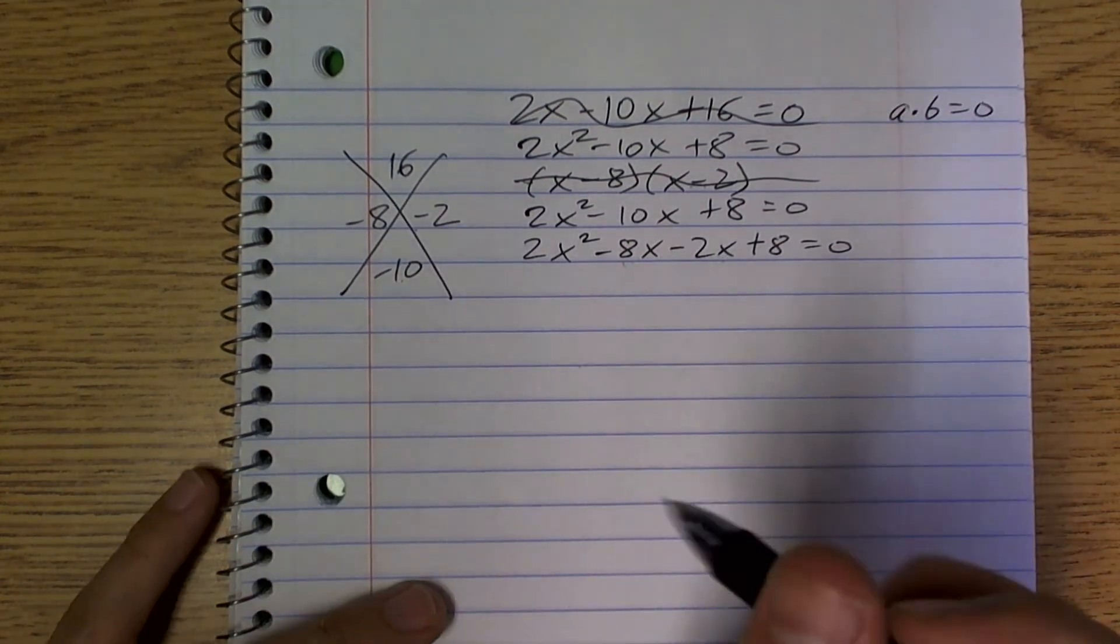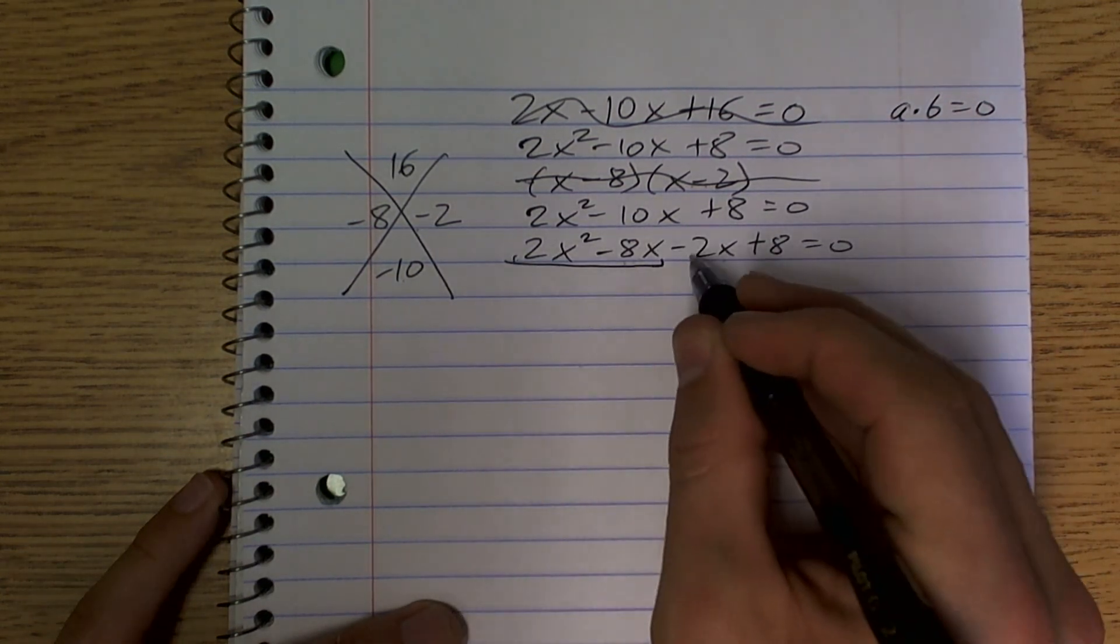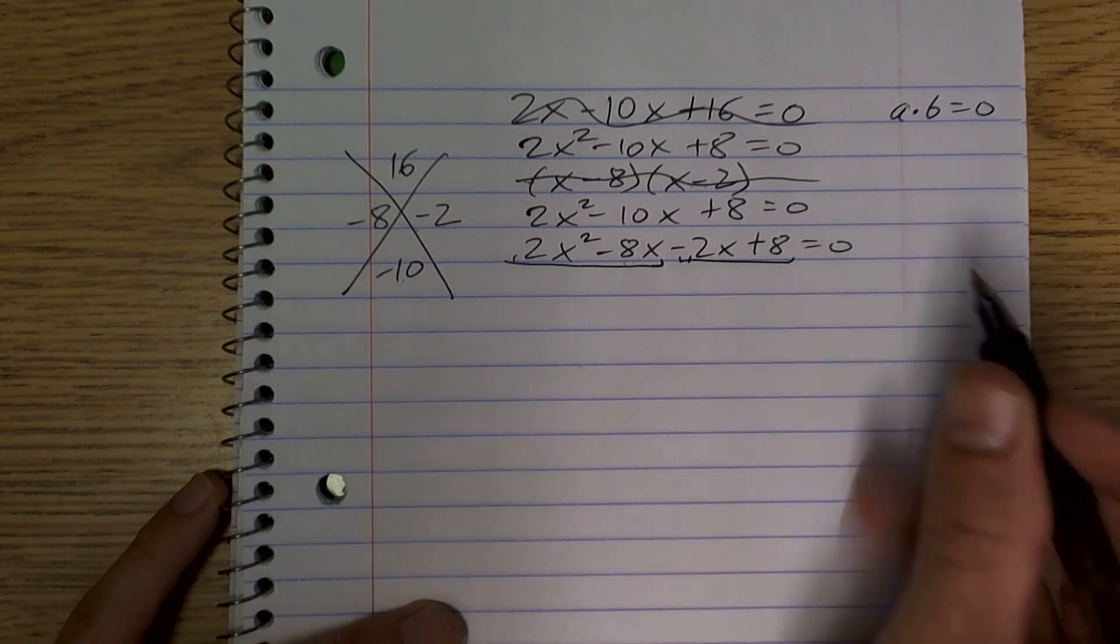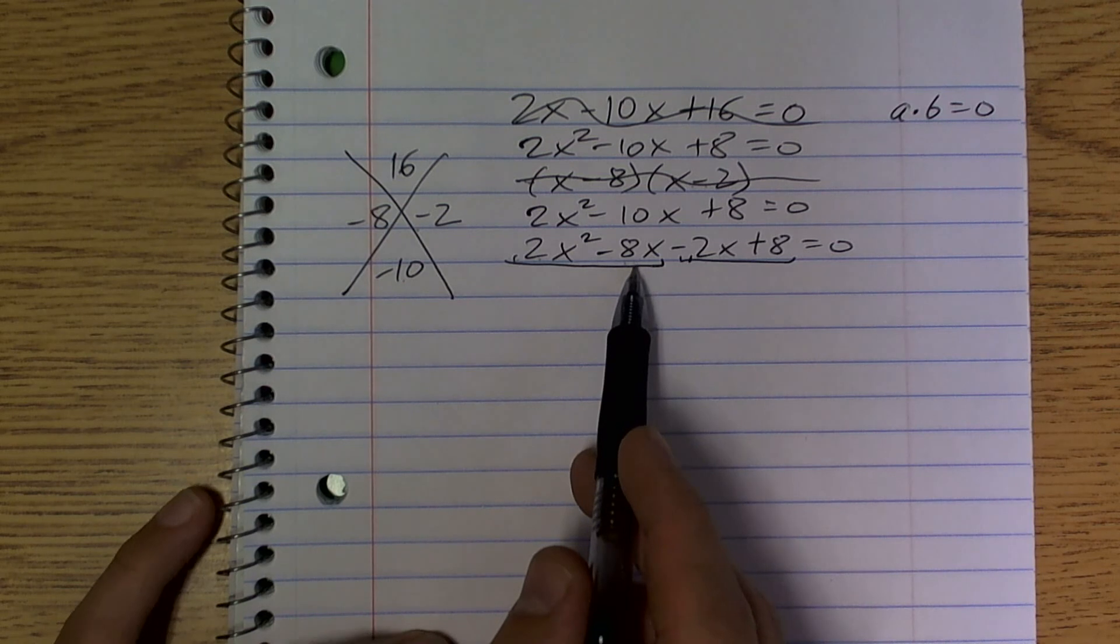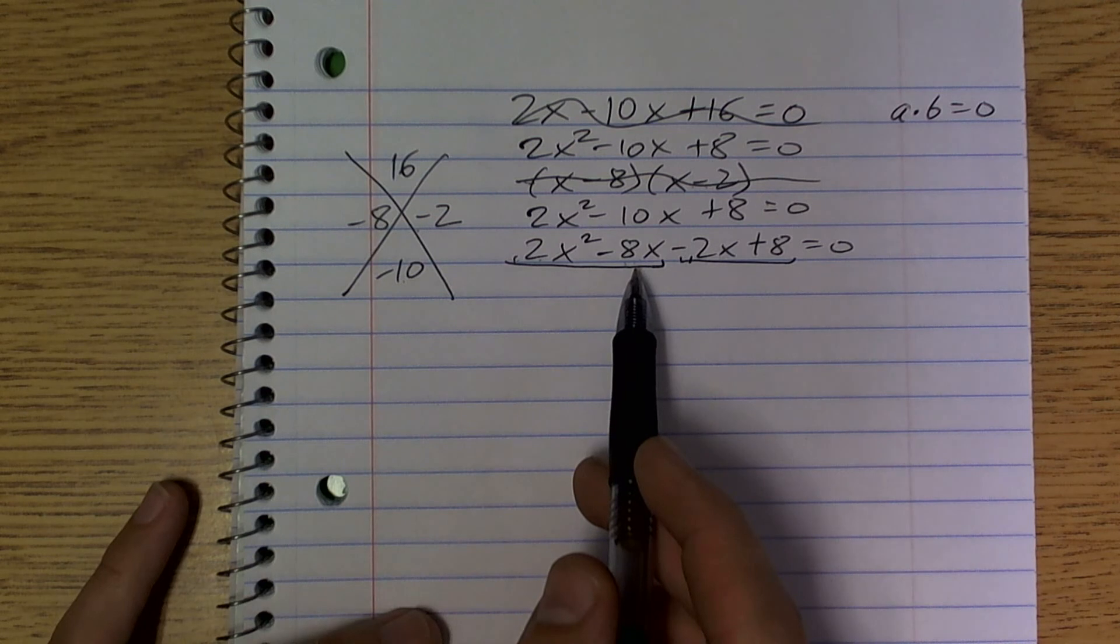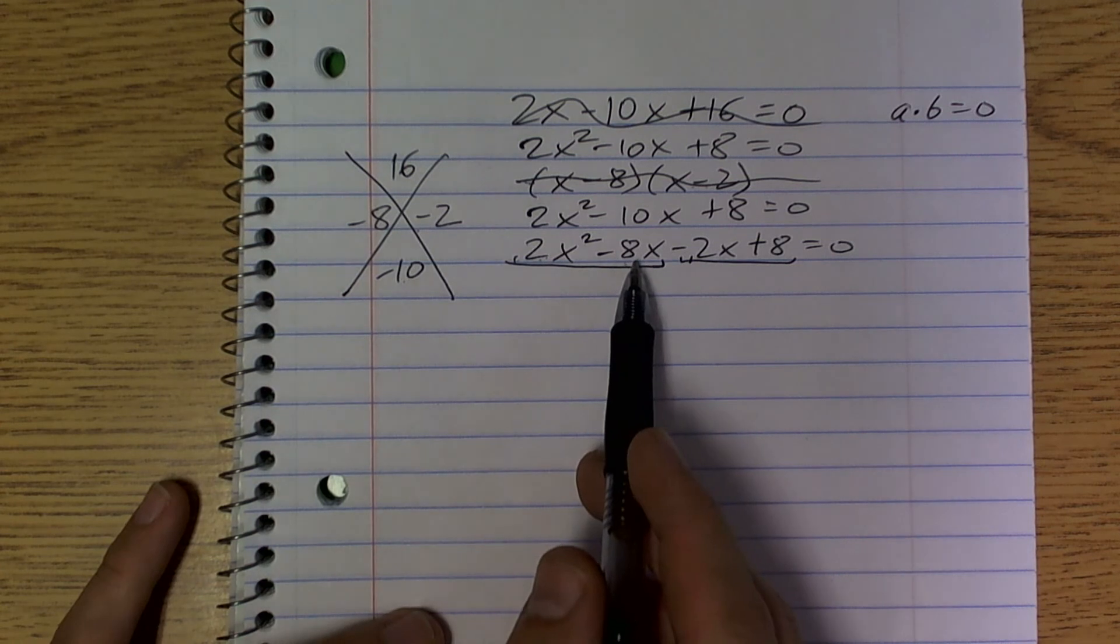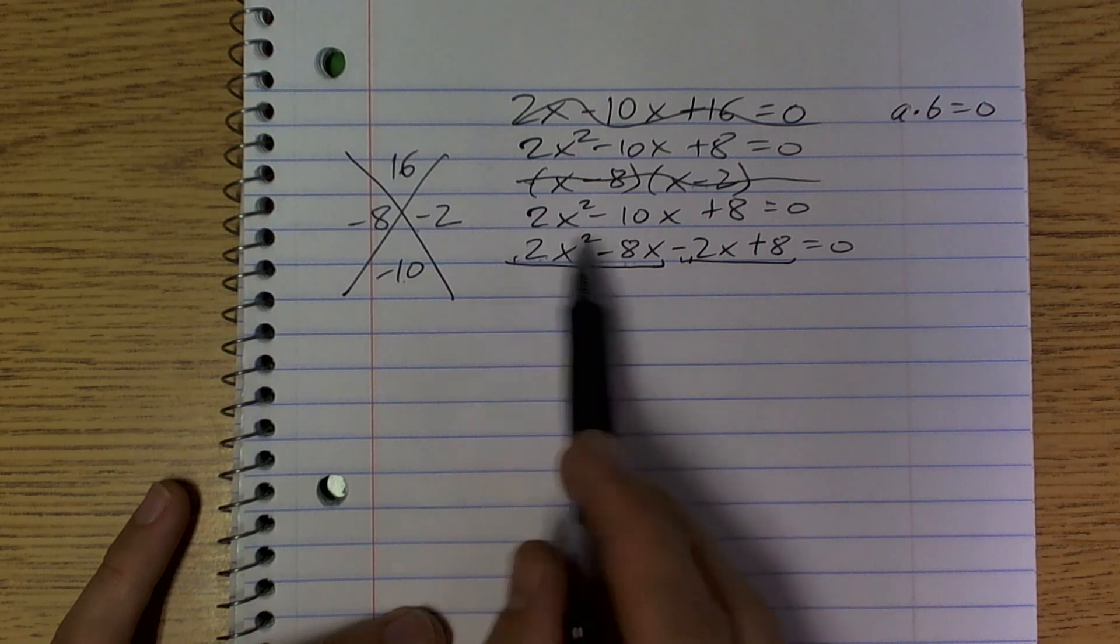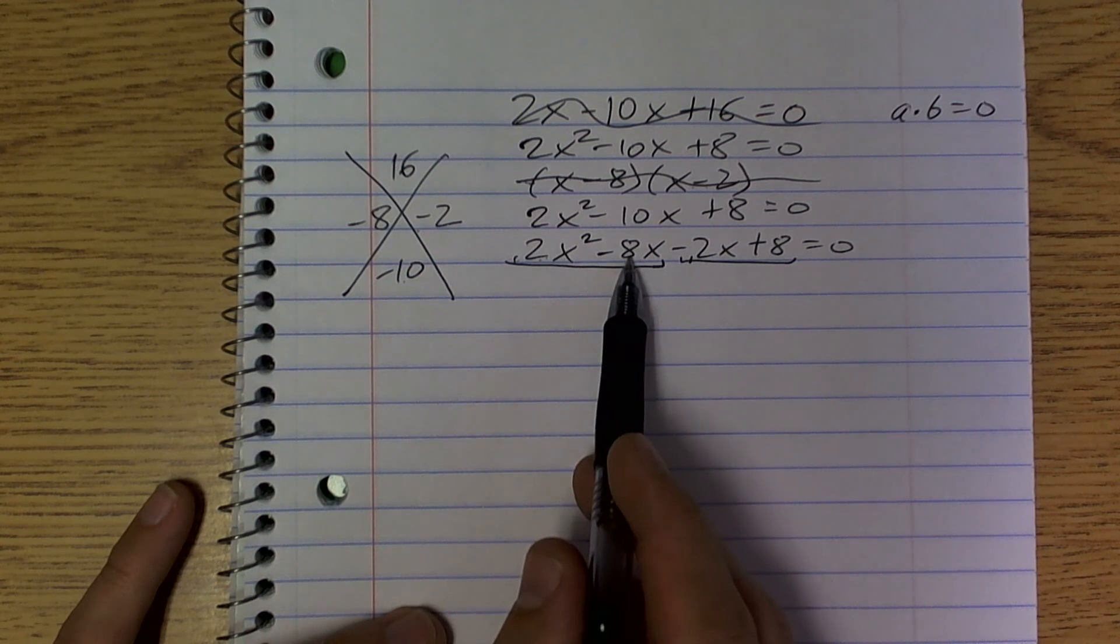So now once we have it written like this, now what we can do is factor each one of these separately. So I'm going to factor the first two terms, and I'm going to factor the last two terms. This is what we call factor by grouping. So when I look at these first two terms, I can factor out a what? What do these two have in common?